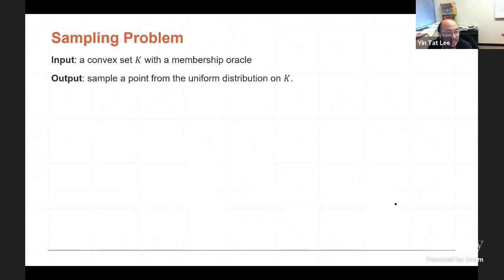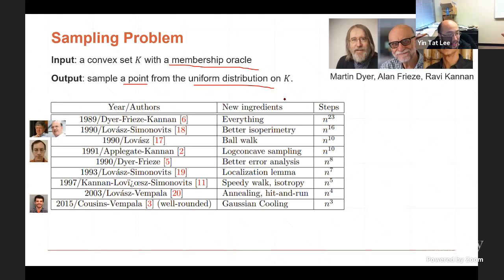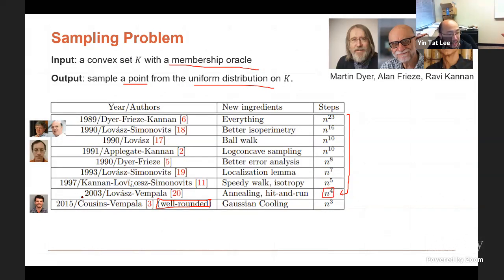This talk is again about this problem. You have a convex set. Given any point, you can tell whether the point is in the set or not — this is the membership oracle. We want to sample a point according to the uniform distribution inside K. This problem is well studied. As you can see, the running time has been gradually improving.